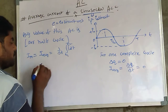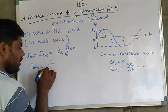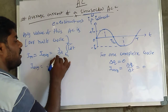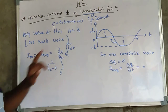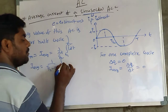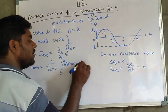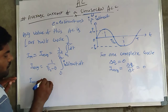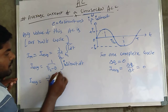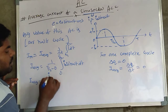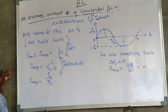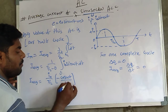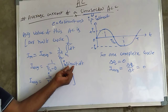For the half cycle, t₁ = 0 and t₂ = T/2. Substituting, the average current equals 1 over (T/2 − 0), times the integral from 0 to T/2 of i₀ sin(ωt) dt. We can write i₀ outside the integral, so we need to evaluate the integral of sin(ωt) dt.